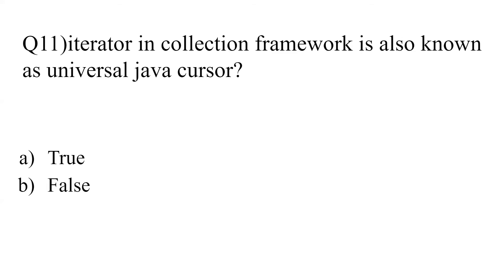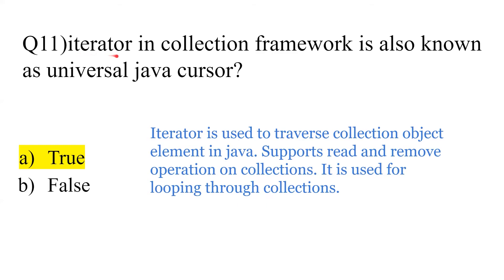Question 11: 'Iterator in the collection framework is also known as a universal Java cursor.' The answer is True. Whenever we traverse data structures like ArrayList, LinkedList, or maps, we use an iterator. It starts from the beginning and goes till the end. Iterator supports read and remove operations on collections and is used for looping through collection elements in Java.